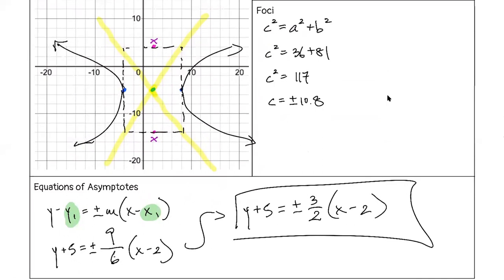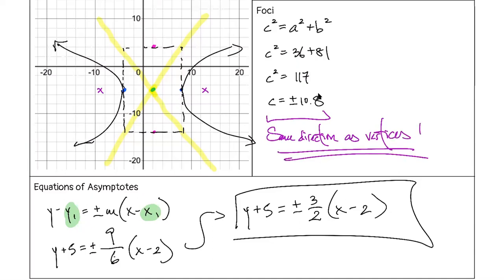Question about the location of the foci: yes, the foci follow in the same direction as the vertices. So we're counting out 10.8 from the center in the x direction, not the y direction. Sorry for drawing them incorrectly earlier. Thank you for catching that.